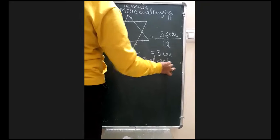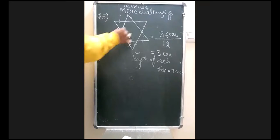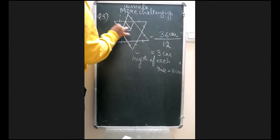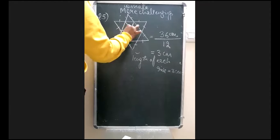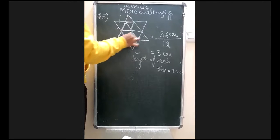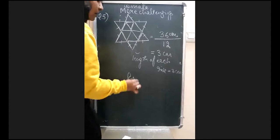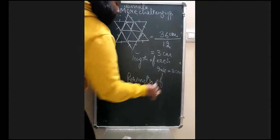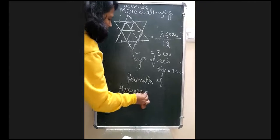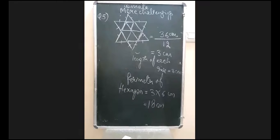The hexagon inside the star has 6 sides, each measuring 3 cm. So the perimeter of the hexagon = 6 × 3 = 18 cm.